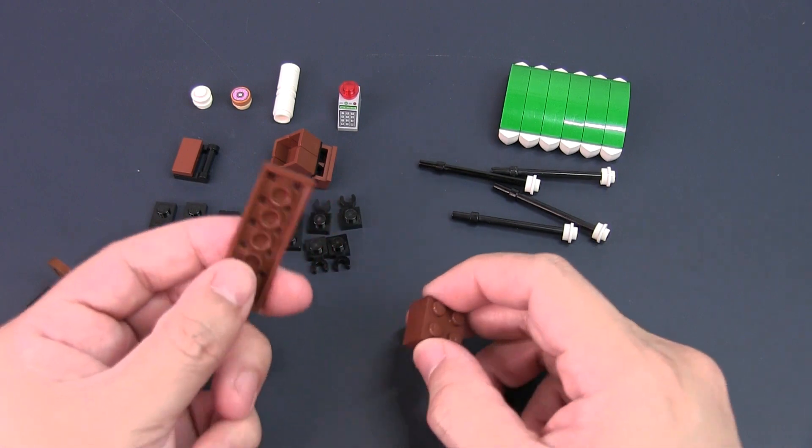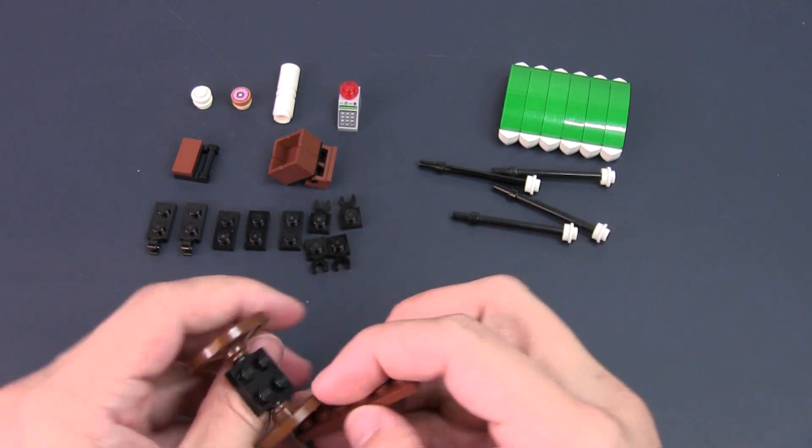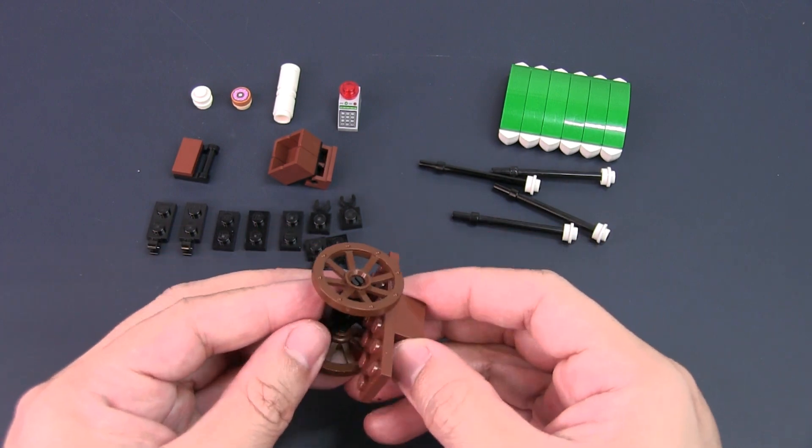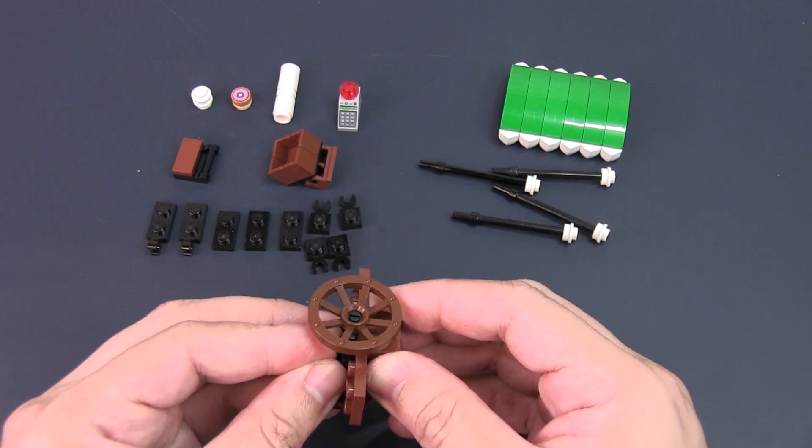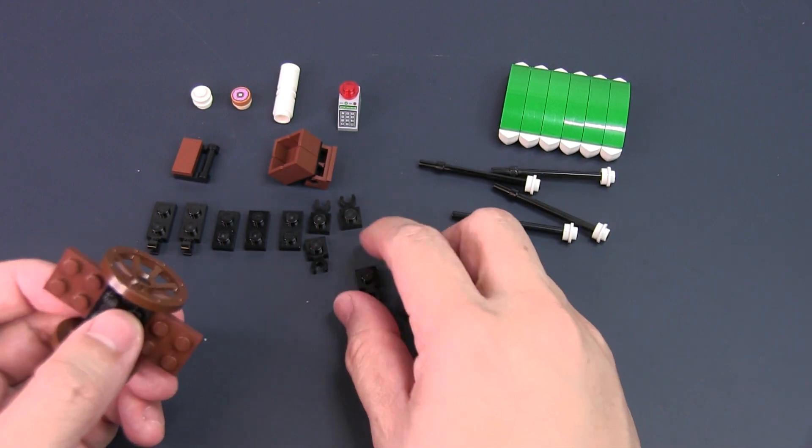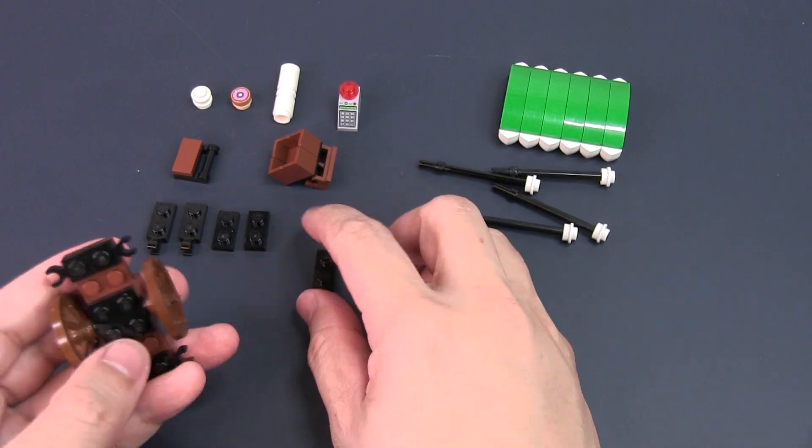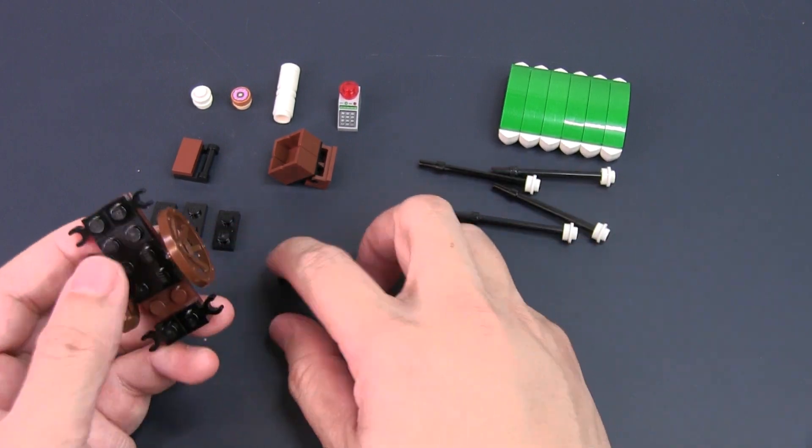To build the base of the wagon, take the 2x2 brick and place it underneath the center of the 2x6 plate. Take the wagon wheels and axle and place it onto the center of the 2x6 plate. Take a 1x1 bracket with the clip on the side and place it on each corner of the 2x6 plate. Fill in the 2 empty spaces with the 1x2 plates.